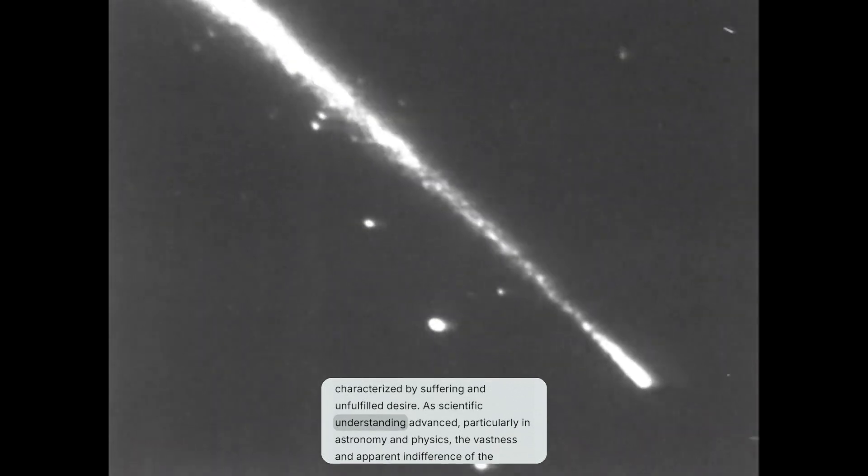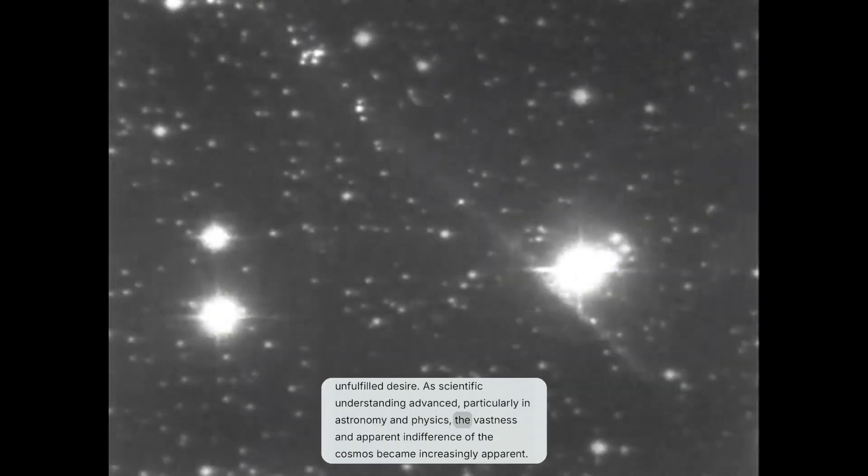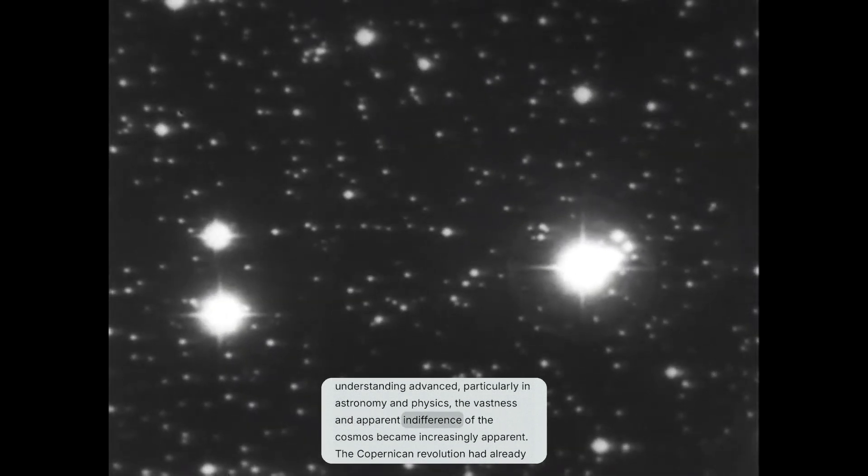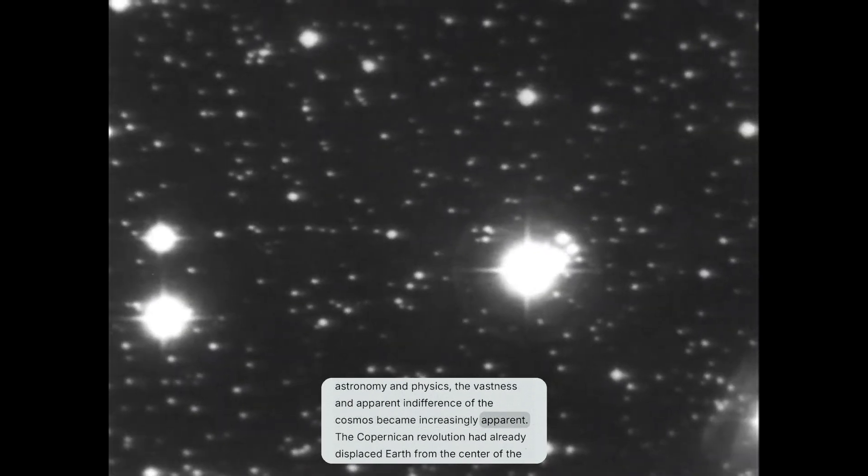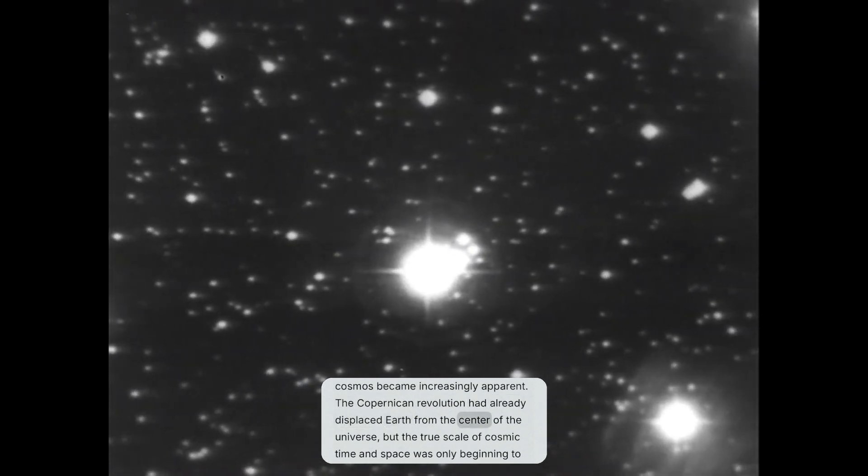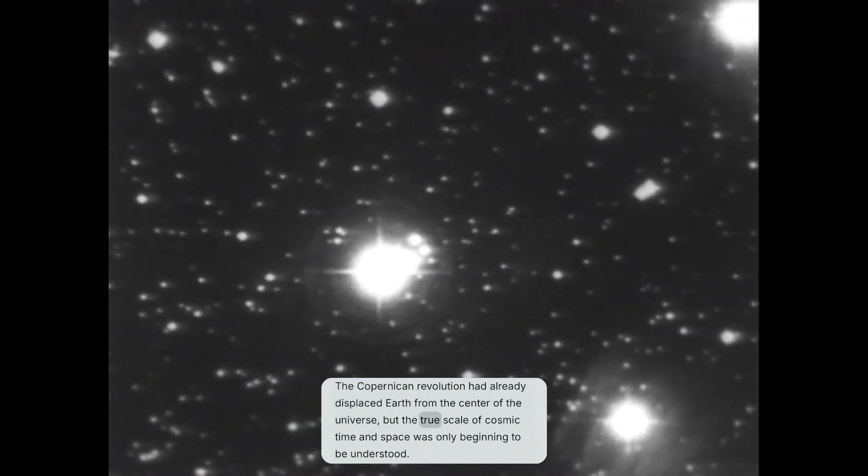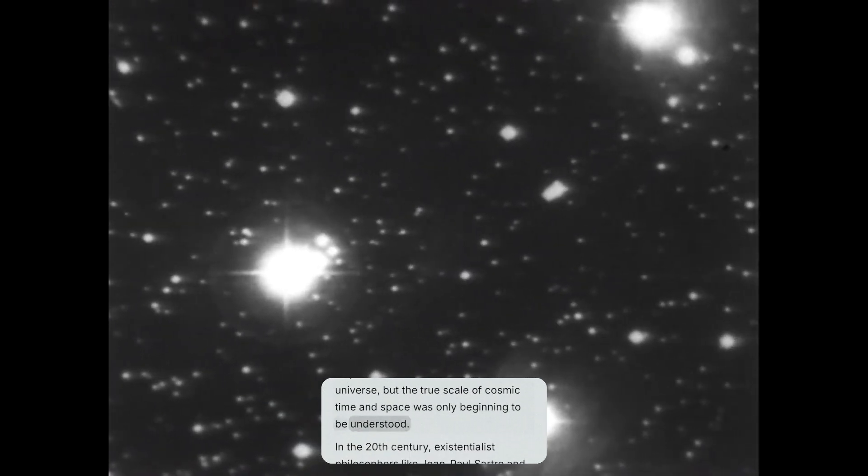As scientific understanding advanced, particularly in astronomy and physics, the vastness and apparent indifference of the cosmos became increasingly apparent. The Copernican revolution had already displaced Earth from the centre of the universe, but the true scale of cosmic time and space was only beginning to be understood.